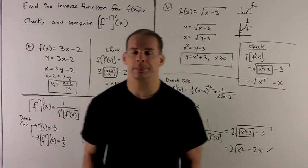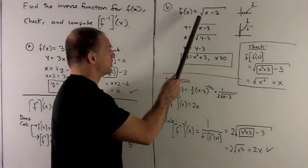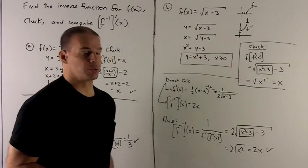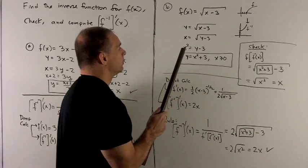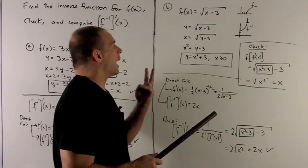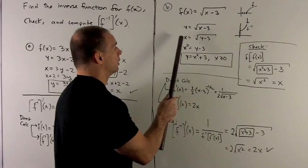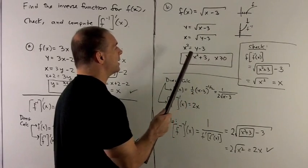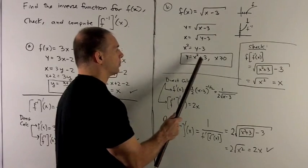Alright, let's do another one. So I'm going to do f(x) equal to square root of x minus 3. So we're going to do our usual trick of, we switch x and y, and then solve for y. So we switch, square both sides, move the 3 over, and then I get y equal to x squared plus 3,